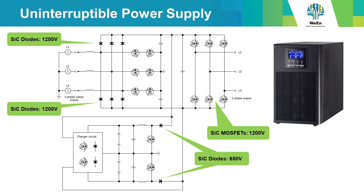Here we see a schematic overview of a UPS, uninterruptible power supply. The silicon carbide components — diodes and MOSFETs — mostly find their way in the input circuitry like rectification and PFC, and in the inverter.